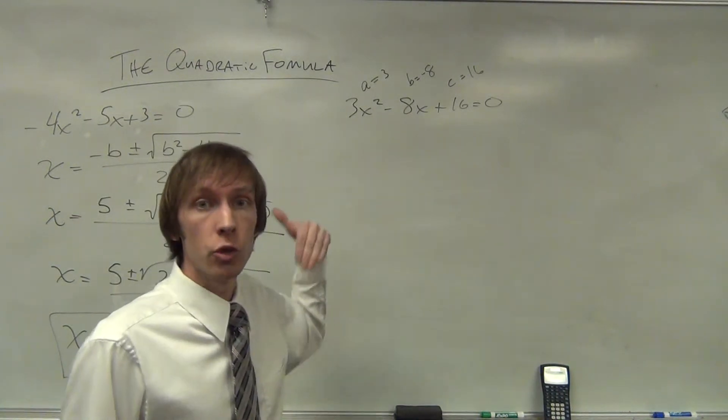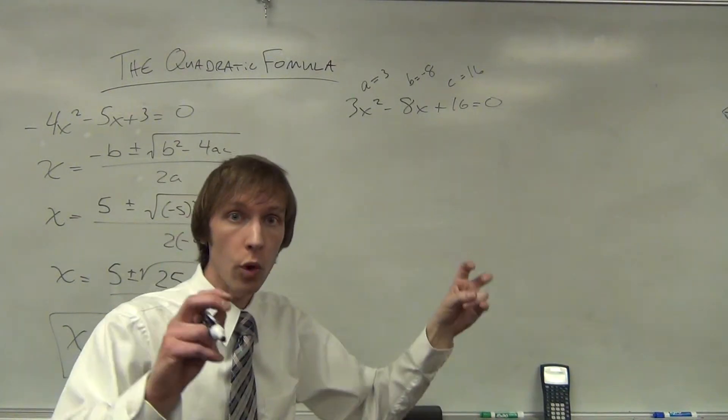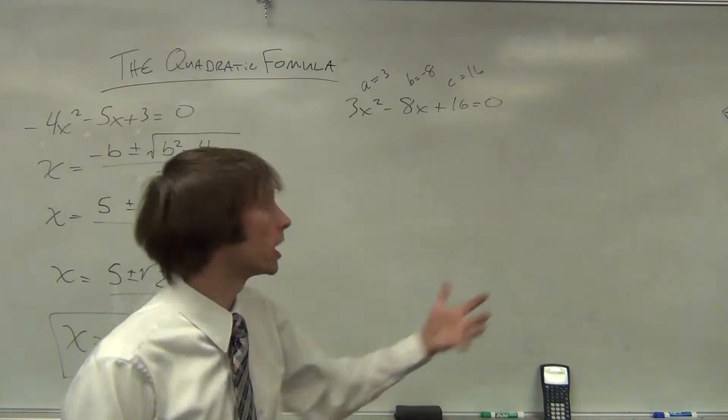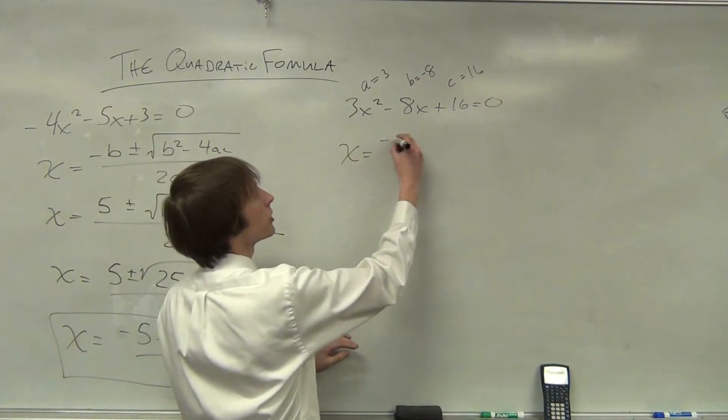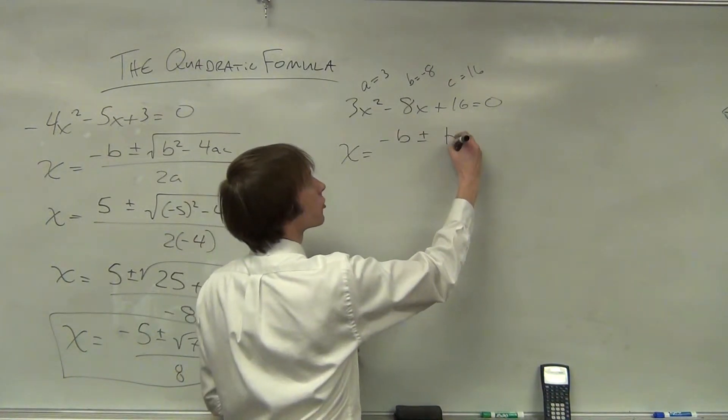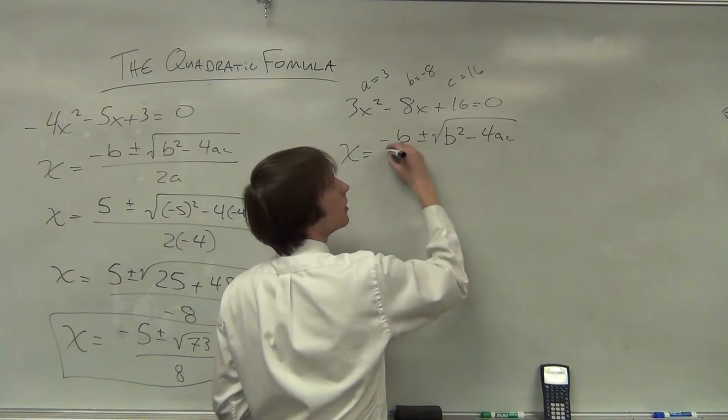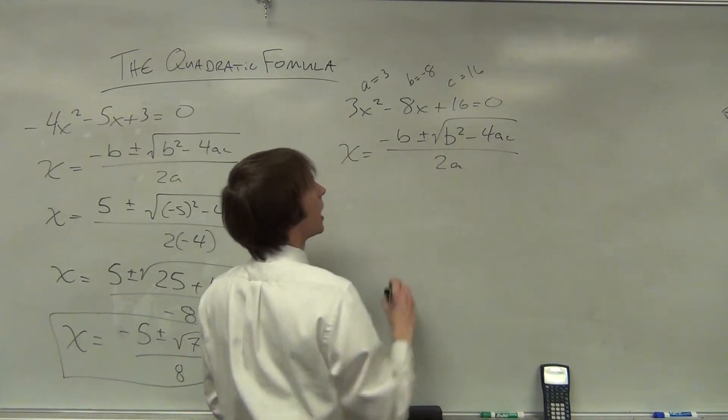So let's rewrite the formula. By rewriting it, we will start to commit it to memory. I know it's more work, but if it helps you make progress, then who cares, right? Just do the extra work. x equals the opposite of b plus or minus the square root of b² - 4ac, all divided by 2 times a.